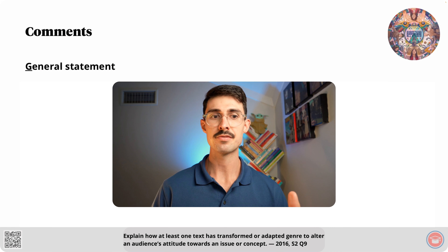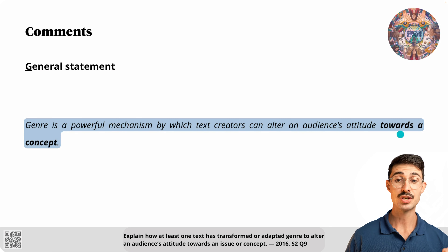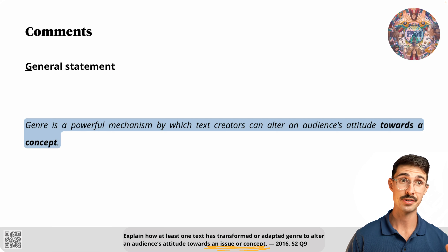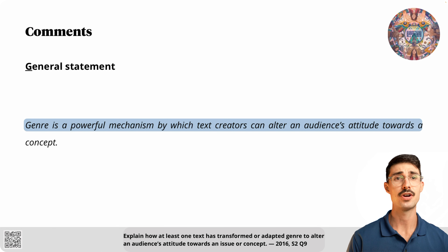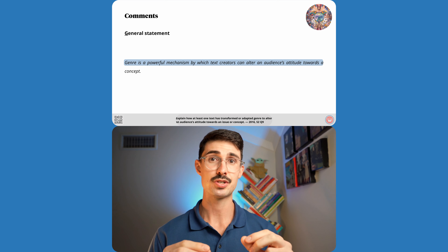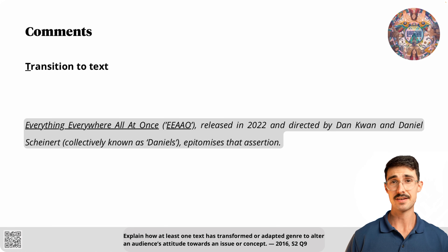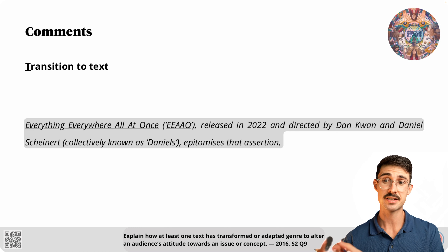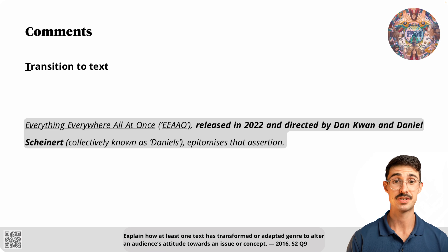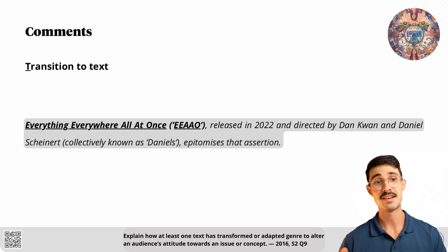Here are some comments about each element of that intro. Firstly, in relation to the general statement: it's about genre and how it can be used to alter an audience's attitude towards a concept. By saying 'towards a concept' rather than 'towards an issue or concept', I'm telling the marker straight away that I know the question asked me to choose a concept or an issue and not both. Note that the general statement doesn't explicitly refer to the words 'transformed' or 'adapted' from the question — it doesn't need to. The general statement is just easing the marker into the essay and isn't directly answering the question. That's why it should only address one or two elements of the question in a general way. Next up, we have the transition to text. This part transitions from the general statement to the plot synopsis by introducing the text. The sentence states the essential info — its release date and directors. There is no way I am writing everything everywhere all at once every single time, so I've abbreviated the title to save time throughout the essay.